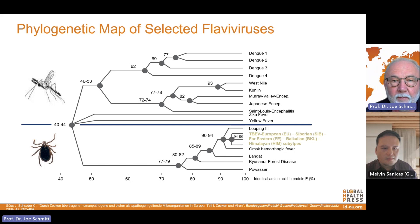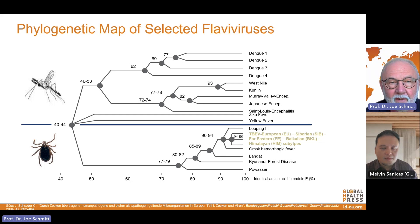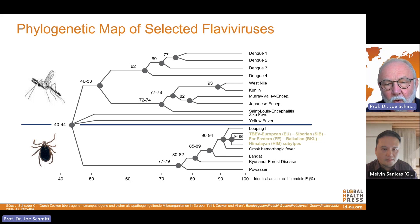Among the mosquito-borne flaviviruses, dengue virus is at the top. Interestingly, they are closely related antigenically but not that closely related genetically, as you can see here. The tick-borne encephalitis viruses are much more closely related to each other, even to Langat and Omsk hemorrhagic fever. One vaccine likely covers all these different tick-borne entities, and probably also Langat and Kyasanur.